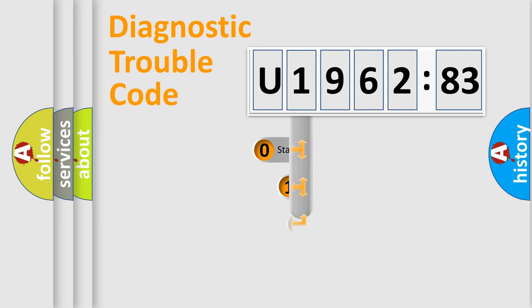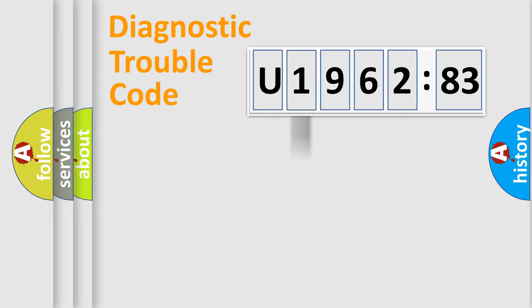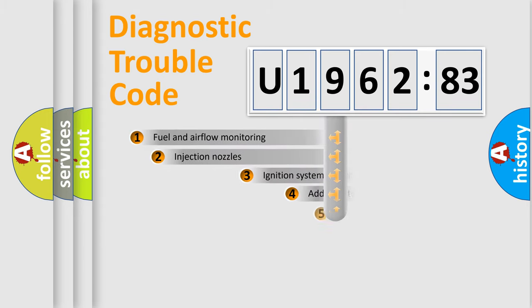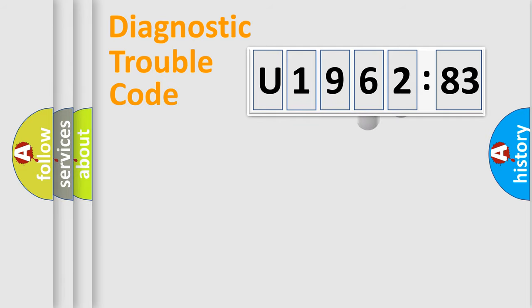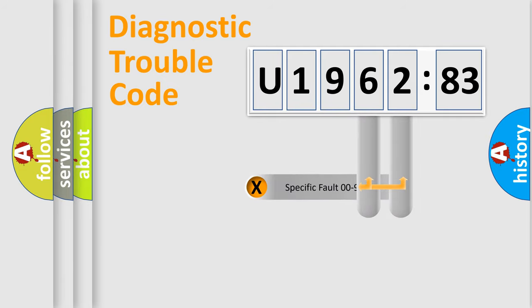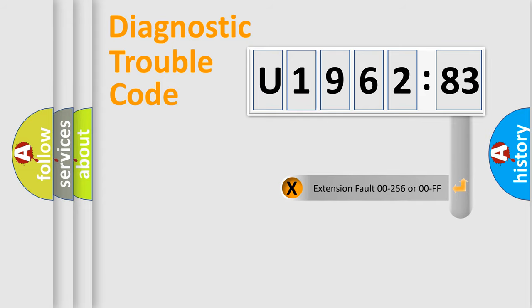This distribution is defined in the first character of the code. If the second character is expressed as zero, it is a standardized error. In the case of numbers 1, 2, or 3, it is a more specific expression of a car-specific error. The third character specifies a subset of errors. This distribution is valid only for the standardized DTC code. The last two characters define the specific fault of the group. The add-on to the error code serves to specify the status in more detail.